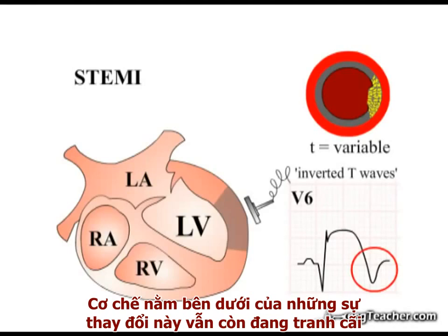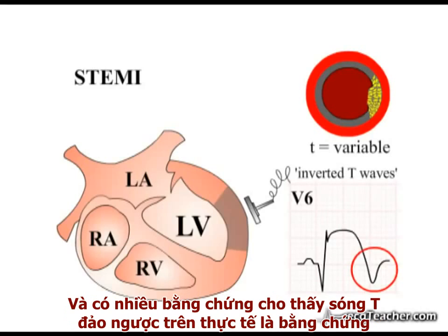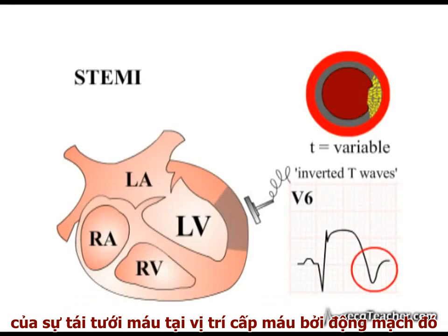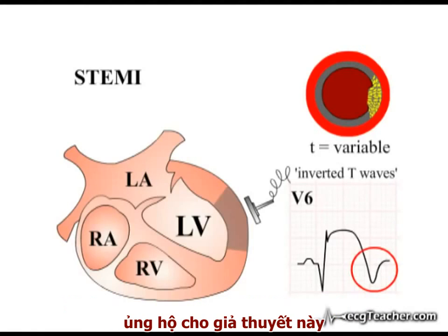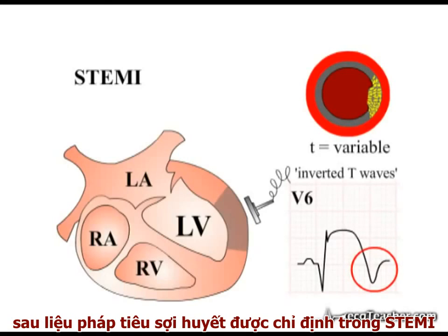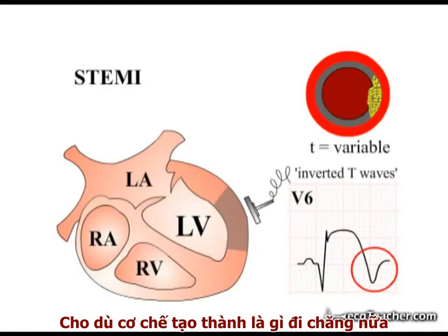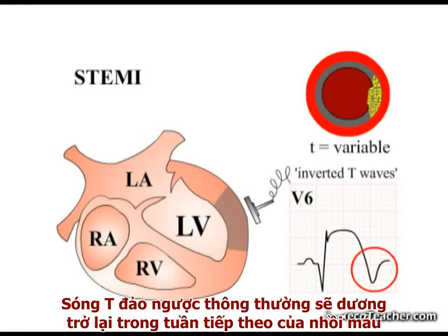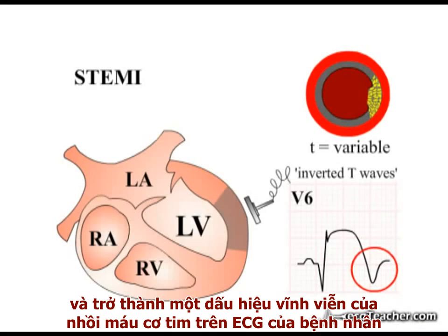The mechanism underlying this change is controversial. The process of clot formation in acute MI is dynamic, and there is some evidence that T wave inversion may actually reflect re-perfusion of the area supplied by the vessel, as it re-cannulates either spontaneously or in response to treatment. In support of this view, flipped T waves are commonly seen to develop shortly after thrombolytic therapy is initiated for STEMI. Flipped T waves generally return to the upright configuration in the week following infarction, but occasionally can persist as a permanent marker of the infarct on the patient's ECG.